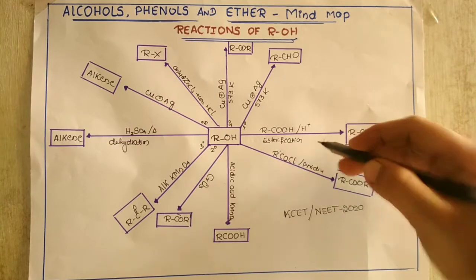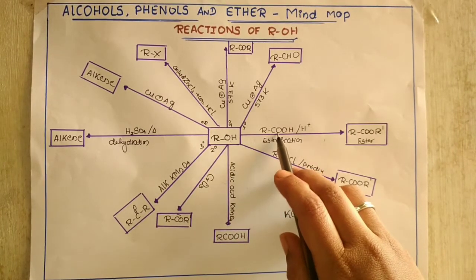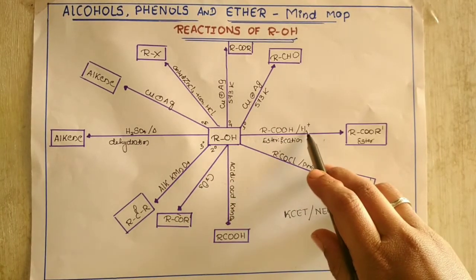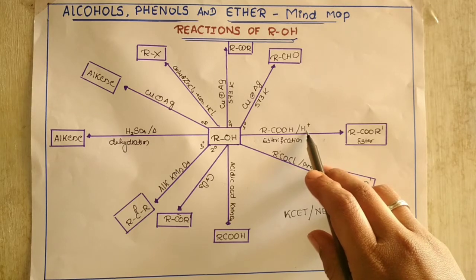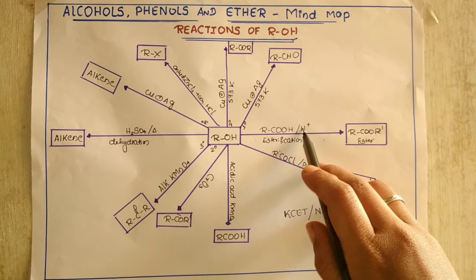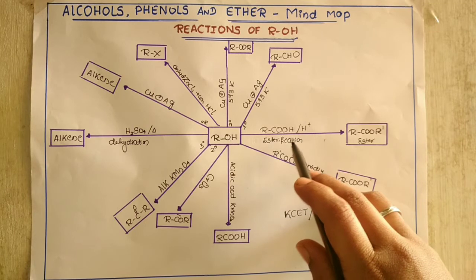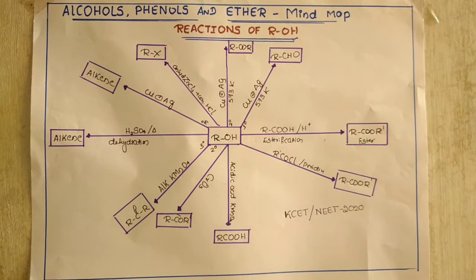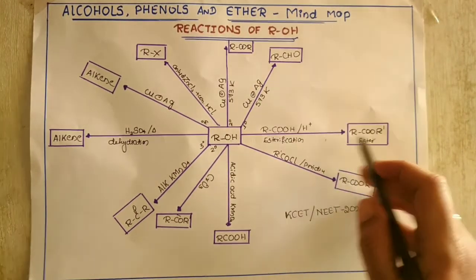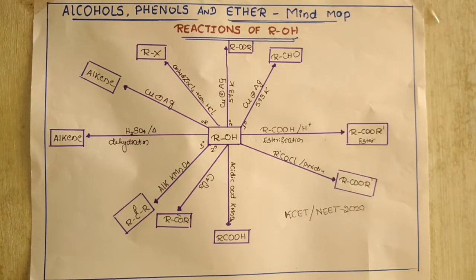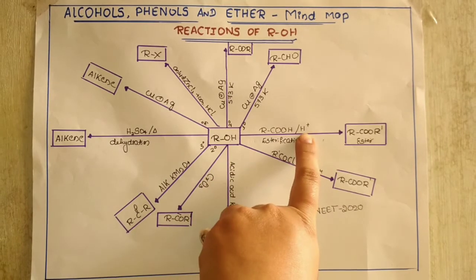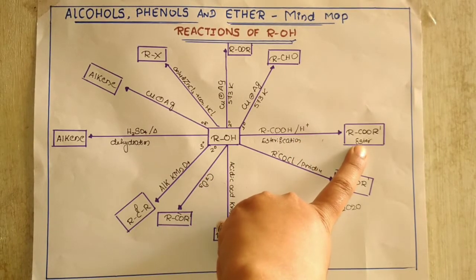I'll go with this one first: when alcohol is treated with a carboxylic acid and they react together in the presence of an acidic medium, there is formation of an ester. In the presence of sulfuric acid or HCl, which acts as a dehydrating agent, the water molecule will be removed and there is formation of an ester. This process is known as esterification. So if alcohol and carboxylic acid are given in the presence of an acid, the product will be an ester.